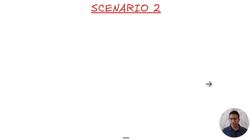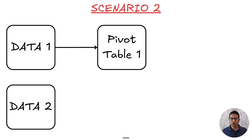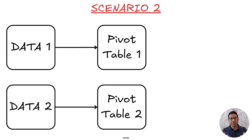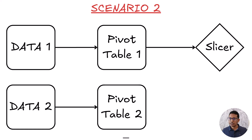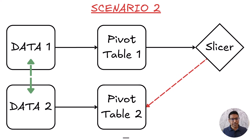In scenario two, however, things are a little difficult. I have two separate data sources — data one and data two — and I can create a pivot table with each. These pivot tables do not share anything in common, so if I create a slicer for pivot table one and try to connect it to pivot table two, I will not be able to do this because there is no common link. I would have to use PowerPivot to create a relationship between the two data sets so that I can have a slicer that controls multiple pivot tables.